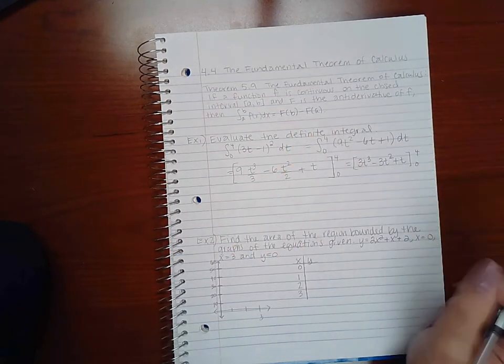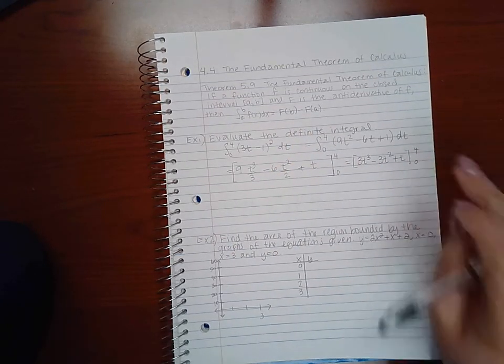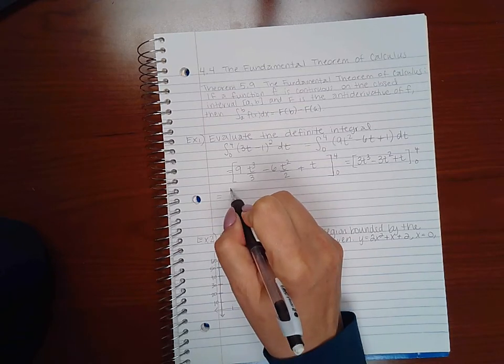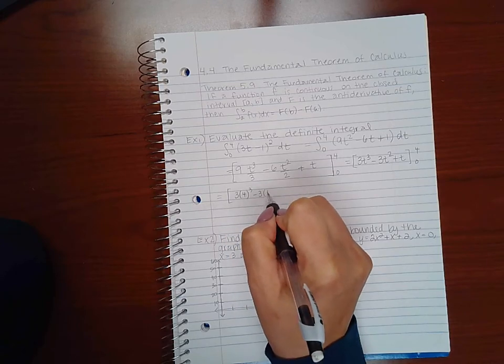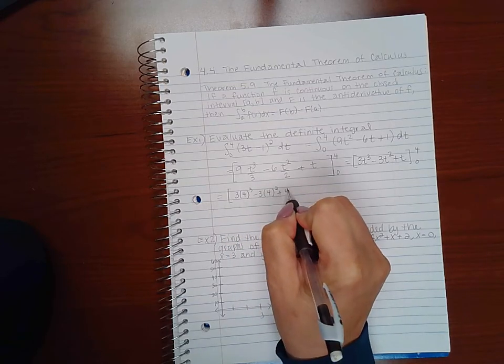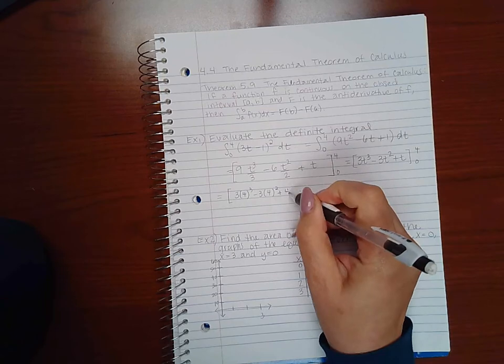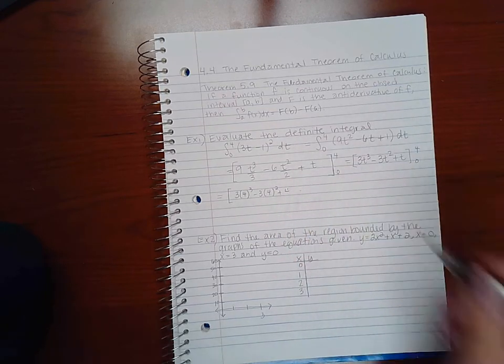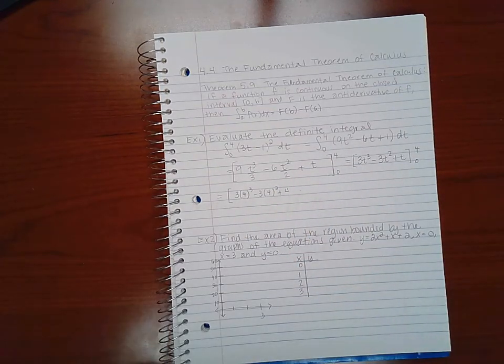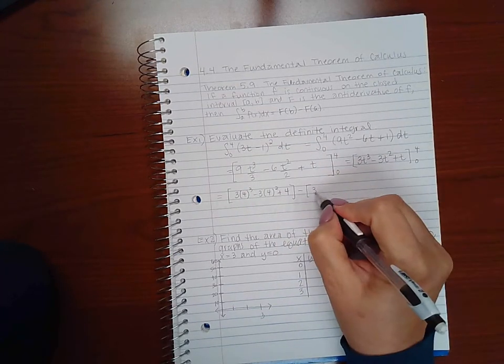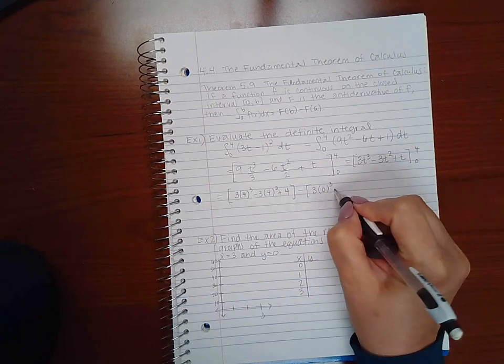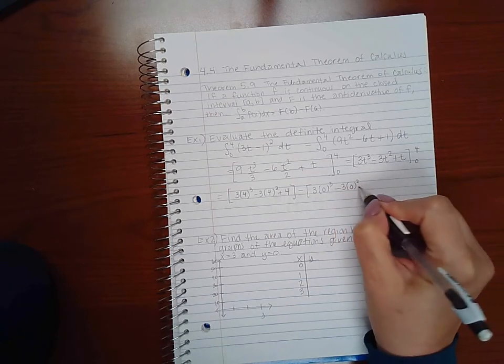And so now I have to follow the fundamental theorem of calculus. It says to plug in my upper bound first, and then subtract whatever I get when I plug in my lower bound. That would be 3 times 0 cubed minus 3 times 0 squared plus 0.